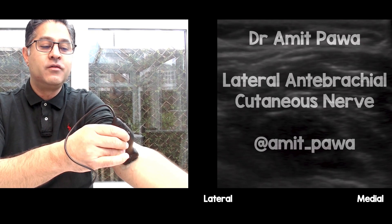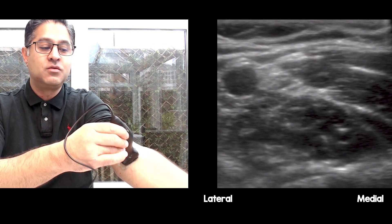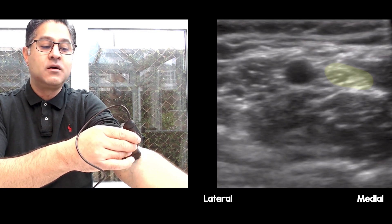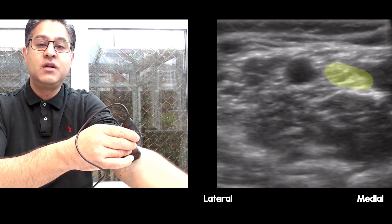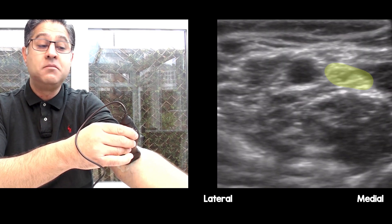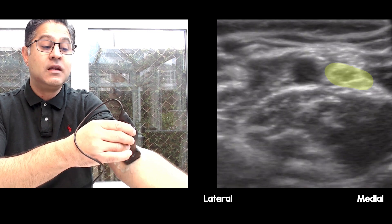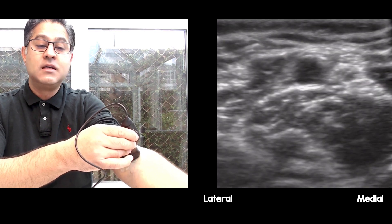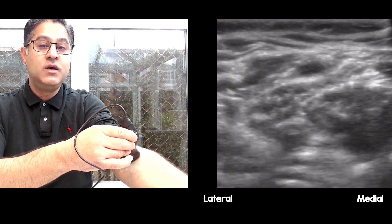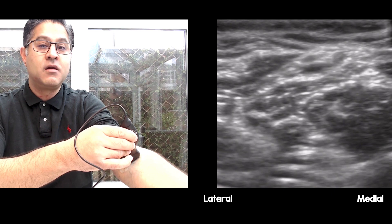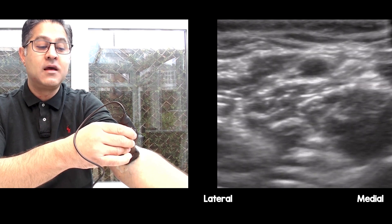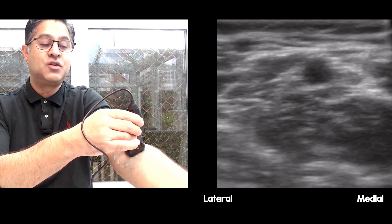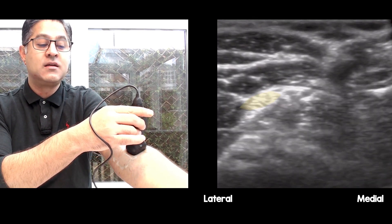I'm going to place it medial over my antecubital fossa. When I do that and place the brachial artery in the center of the screen, you can hopefully see the median nerve lying on the medial side of it — so brachial artery, median nerve — and if I squeeze, you'll see the brachial artery pulsating.